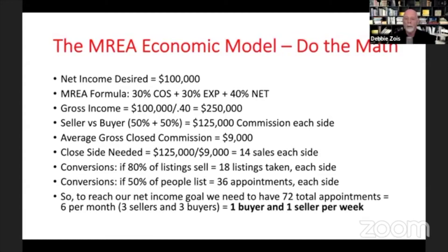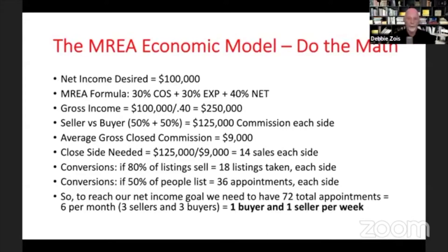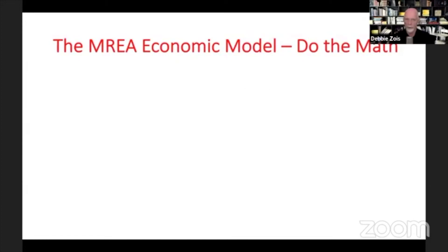72 total appointments is 6 a month — 3 sellers and 3 buyers — or roughly one buyer appointment and one seller appointment per week. What's really neat about this: $100,000 or $250,000 sounds like a lot, but it's only one person a week. That's just an appointment — not a listing taken or a sale. That's the economic model. The whole goal was to find out how many appointments you need per month or per week on each side to hit your goal. Now we know it.